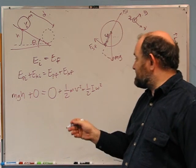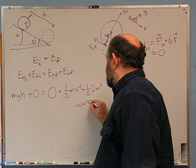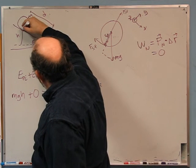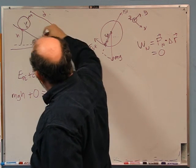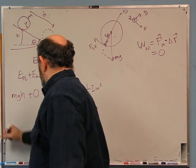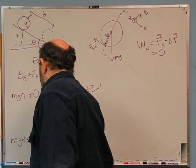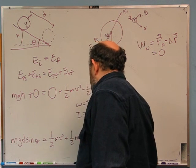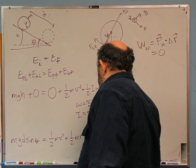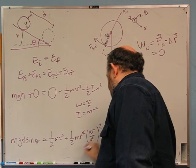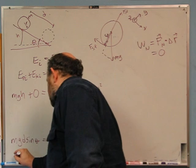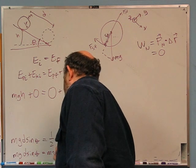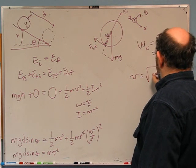For all the reasons from the last problem about rolling without slipping, omega will be v over r. This is a ring, so I is just mr squared. And h — the distance d along the hill gives h equals d sin theta. So mg times d sin theta equals one-half mv squared plus one-half times mr squared times (v/r) squared. The r squared cancels, giving one-half mv squared plus one-half mv squared.